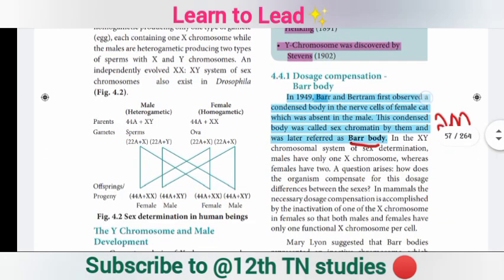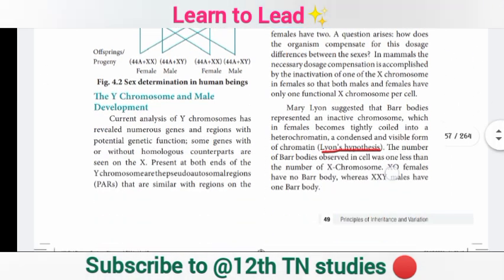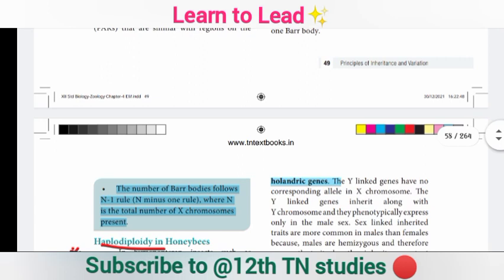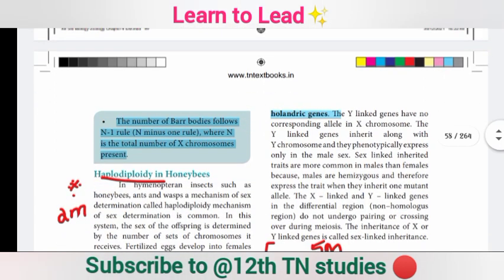The bar body is one important question to highlight. The Lyon Hypothesis is on the next page, along with a box. The number of bar bodies is equal to N minus 1, where N is the number of X chromosomes — this is the N-1 rule.